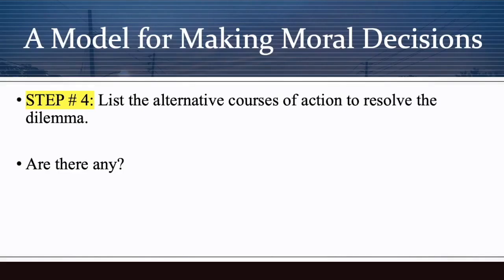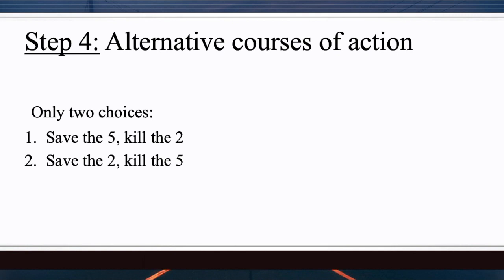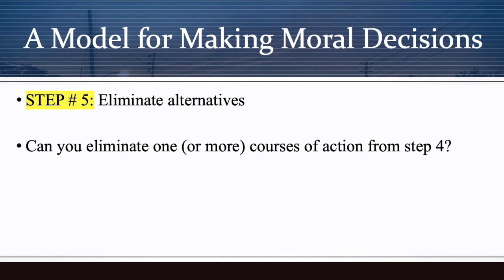Step four — list the alternative courses of action to resolve this dilemma. Really, there are only two here: you either save the five and kill the two, or save the two and kill the five.